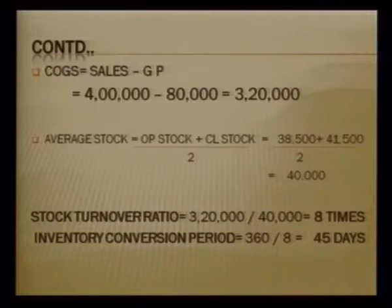In our example the question defines the year as 360 days, so 360 divided by 8 gives 45 days. This means the business takes exactly 45 days to complete one cycle — converting cash into goods and selling them in the market. Shorter the period, the better it is for the business.